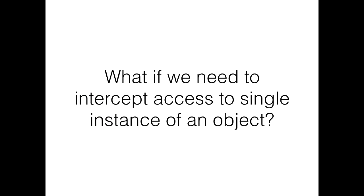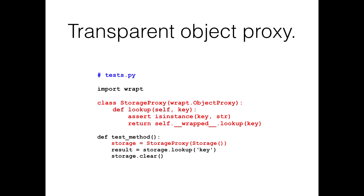Wrapped does even more than that. If you've used mock, you can also mock out objects. Wrapped has something called a transparent object proxy — a class called ObjectProxy. You can apply this to another Python object, and anything you do on that wrapper will be applied to the wrapped inner object. So if you only want to intercept one particular method call on an instance, you can just do what you need on that one method and anything else will pass through transparently. In a test, you create your storage object wrapped with the proxy, intercept one method, and let clear pass through to the original.